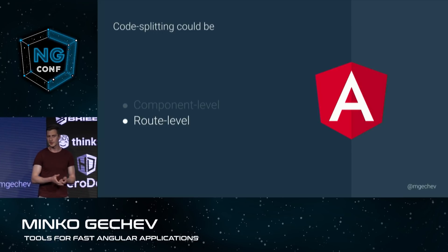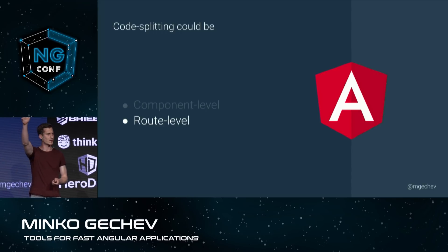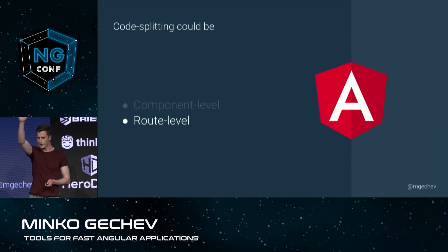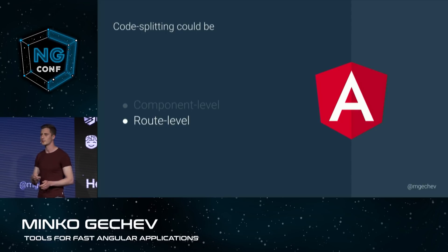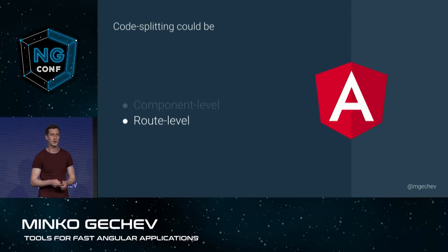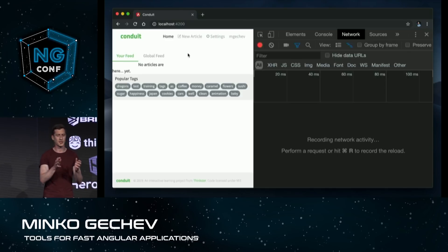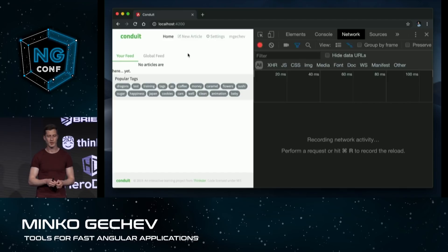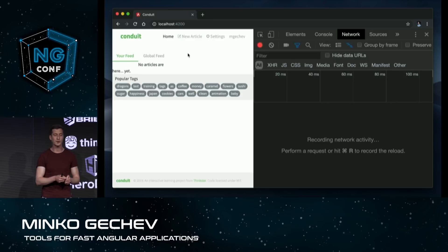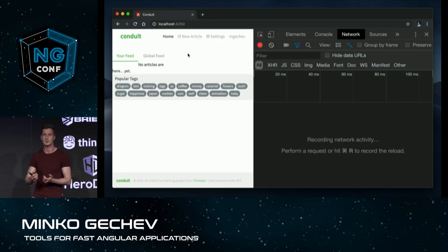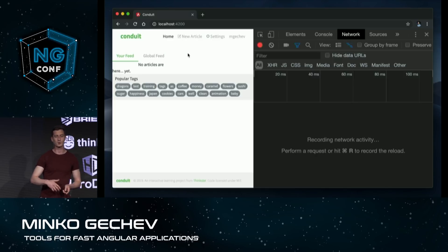Route-level code splitting is something that I hope pretty much everyone is already doing. With route-level code splitting, let's say we have our article list page — once the user opens the articles list, they're only going to download the articles list module, the JavaScript associated with that particular page. And once they navigate to settings, they're going to download the settings module.